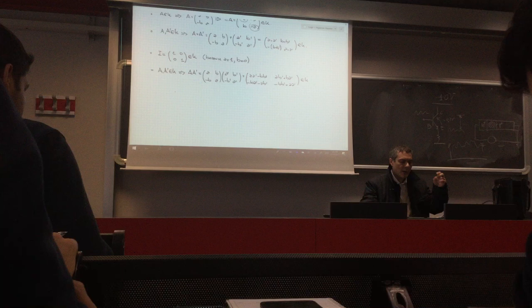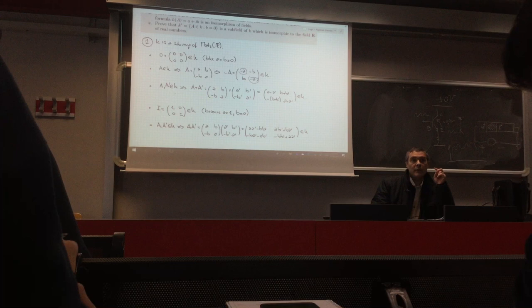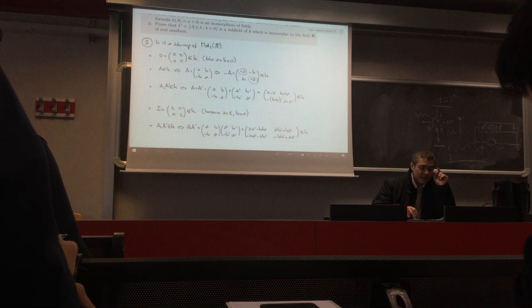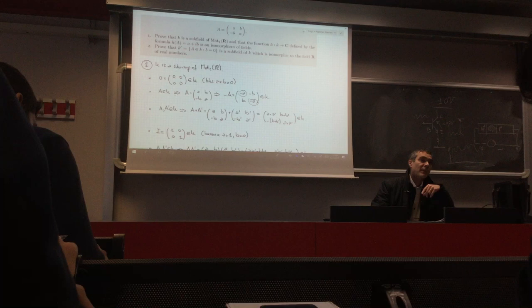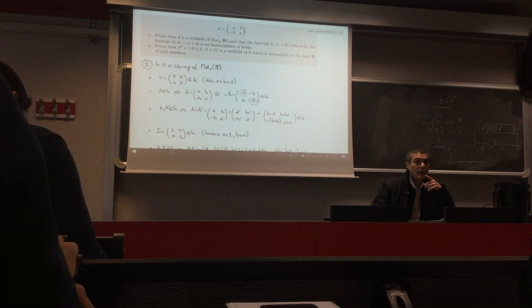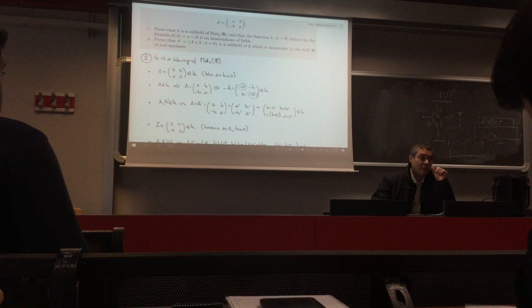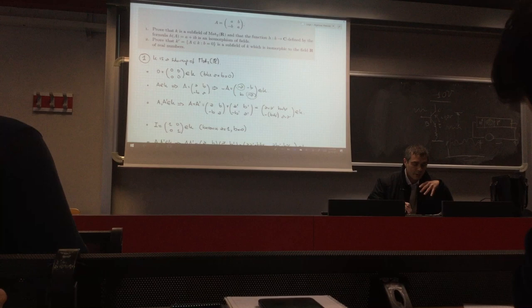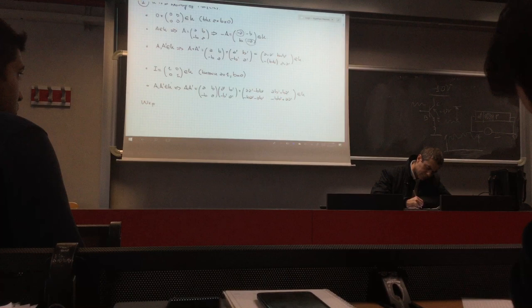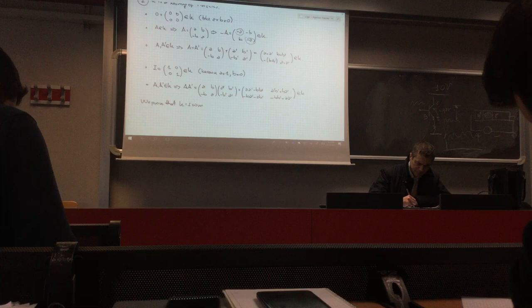So we proved that K is a subring of 2 by 2 matrices over the reals. But we asked to prove K is a subfield, which is a subring that is also a field. To be a field, K must be commutative under multiplication, and every non-zero element must have a multiplicative inverse. We now prove K is commutative under the product.